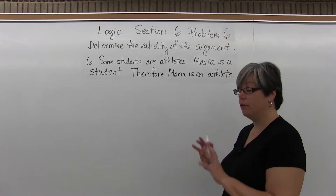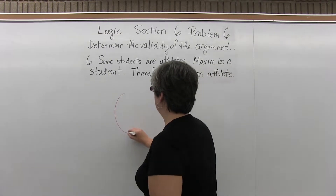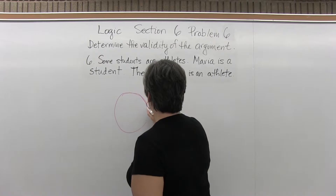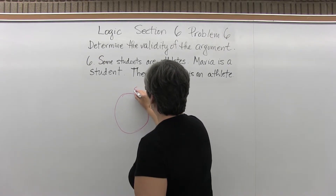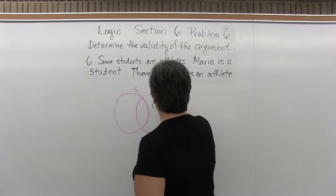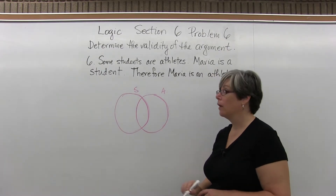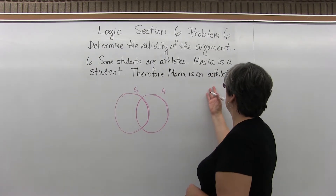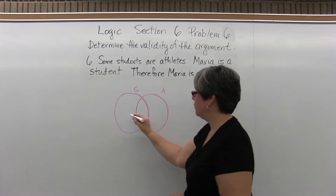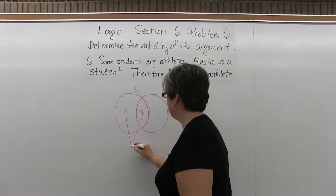Since we have 'some students are athletes,' we'll have two circles that overlap — one for students and one for athletes. We have 'Maria is a student,' so there are two places Maria could go: in here, or in here.